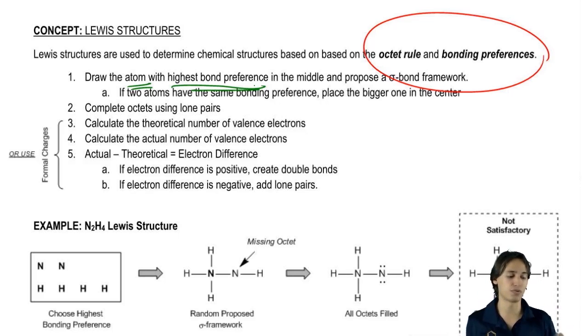So you start off with the highest bonding preference in the middle and then you propose what's called a sigma bond framework. Now I want you guys to pay attention to this word propose. Propose means that this is going to take some trial and error. You're not going to know it usually on the very first try. So what I suggest is don't stress out about this.